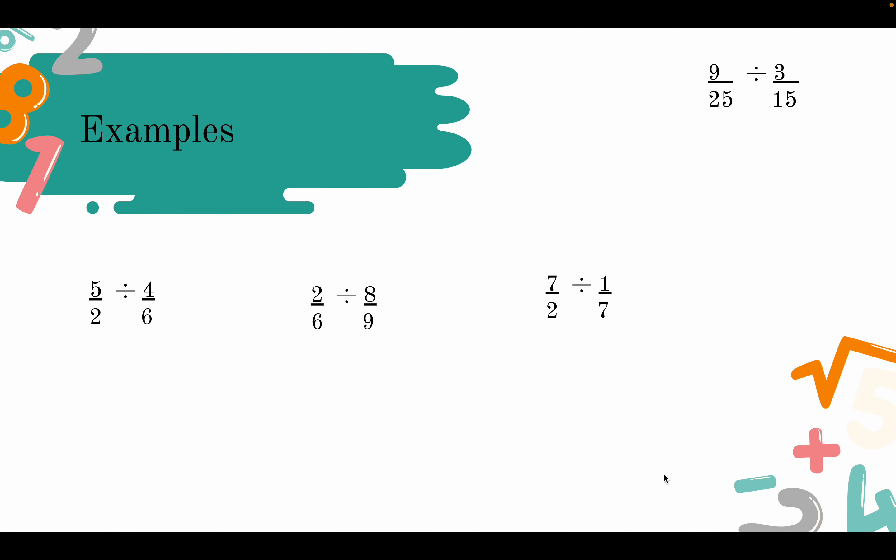Let's look at some more examples to understand the concept. Here we have 5 over 2 divided by 4 over 6. Remember, we keep the first, change the symbol, and flip the last fraction. So we have 5 over 2 times 6 over 4, which is equal to 36 over 8, and we can simplify that to 9 over 2.